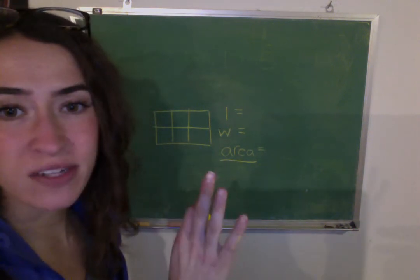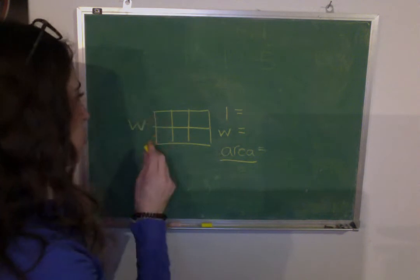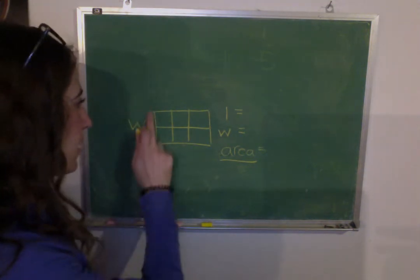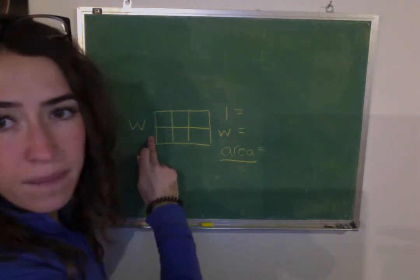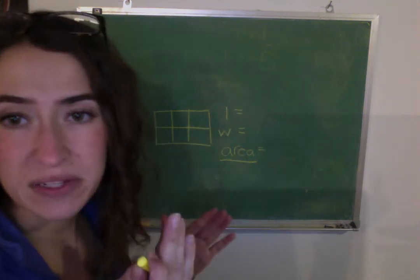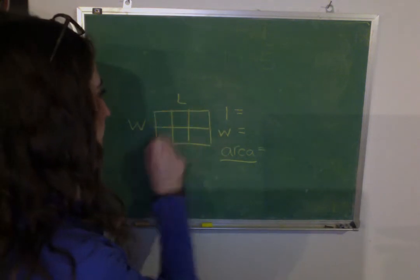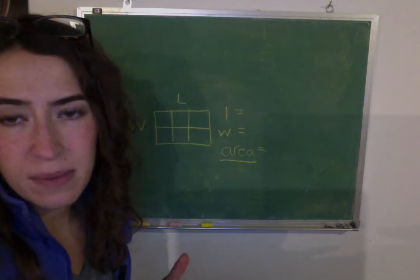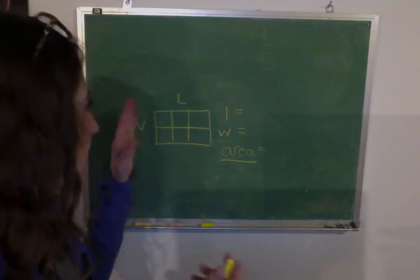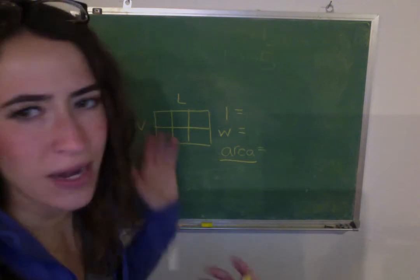But anyways, so the easiest way to do it, just remember you guys, the width is usually this side right here. It's going to be these two, the left and right sides. Typically that's going to be your width. And then the length is going to be your sides that are up and down. That's an easy way to remember it. Sometimes the width will be taller or longer than your length. Not a big deal.